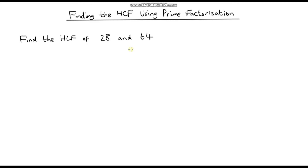Hello and welcome to a video on finding the highest common factor of two numbers using prime factorization. In the previous video we looked at finding the highest common factor of two numbers by listing out all of the factors of both numbers and then identifying which of those factors was the highest and common to both numbers.